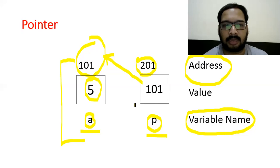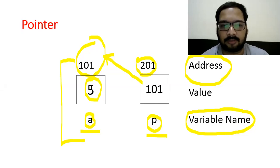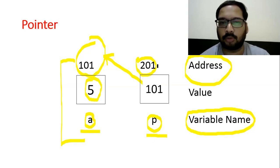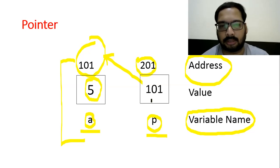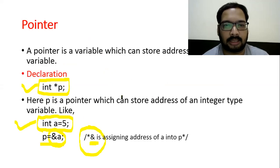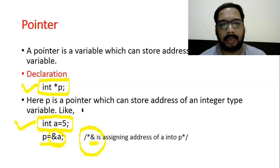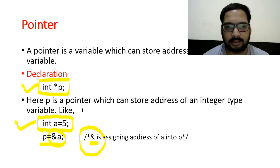Let me summarize: we created variable 'a' with value 5, its base address is 101. We created pointer p whose base address is 201. Using &a, we assigned 'a's address to pointer p. Variable is separate, pointer is separate, and we assigned the variable's address to the pointer.